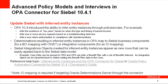Oracle Policy Automation version 10.4 introduced the ability to infer entity instances through policies or rules. For example, to infer the existence of taxed years based on the type and timing of earned income, or to infer one or more service requests or return authorizations in compliance with standard policies. As of version 10.4.1 of the OPA connector for Siebel, these inferred entity instances can result in new rows within the Siebel data model.